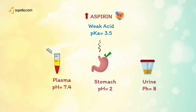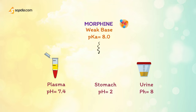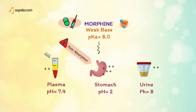Aspirin in high doses may even damage the stomach. Morphine is a weak base with pKa of 8.0 — it is highly charged in the stomach, quite charged in the plasma, and half charged in the urine. Morphine can cross the blood-brain barrier but is poorly and erratically absorbed from the stomach and intestines, and is metabolized by the liver. It must therefore be given by injection or delayed-release capsules.